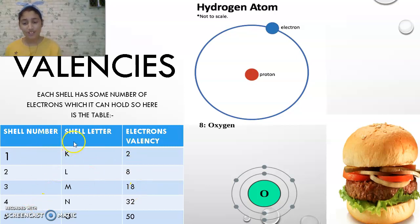Shell number four, shell letter N, electron valency is thirty-two. Shell number five, shell letter O, electron valency is fifty. Shell number six, shell letter P, electron valency is seventy-two. The shell letters are very easy to memorize because they're in alphabetical order: K, L, M, N, O, P.